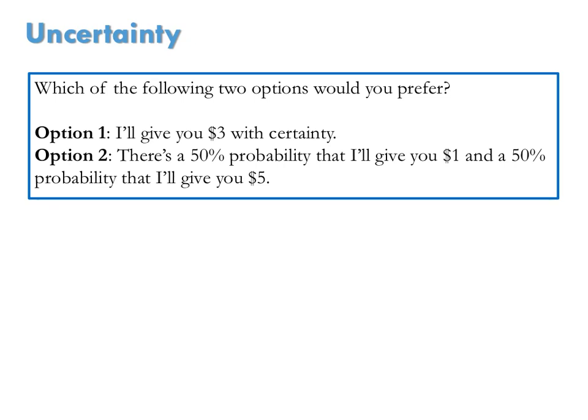Which of the following two options would you prefer? Option 1: I'll give you $3 with certainty. Option 2: I'll flip a fair coin, and there's a 50% chance that the coin will land on heads, and if so, I'll give you $1. And a 50% chance that the coin will land on tails, and if so, I'll give you $5. Which one would you prefer?